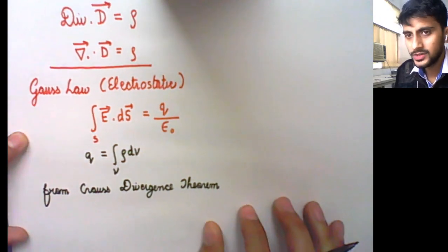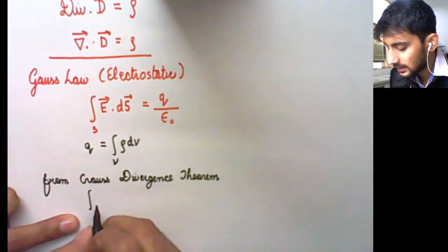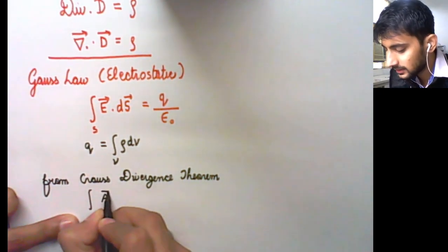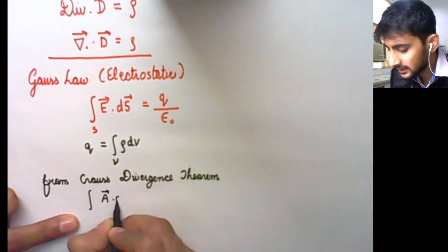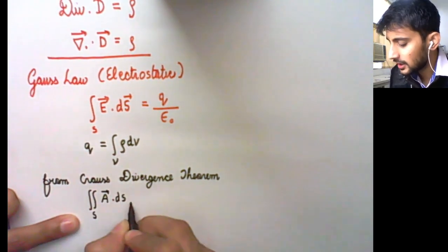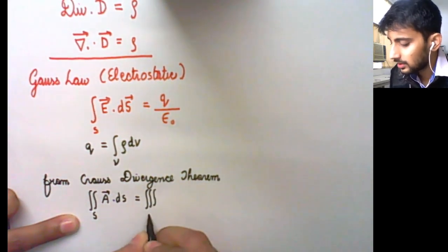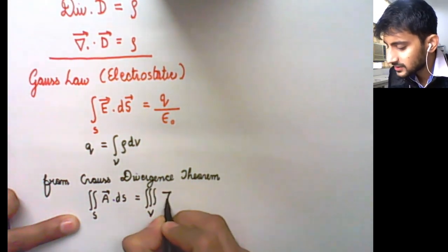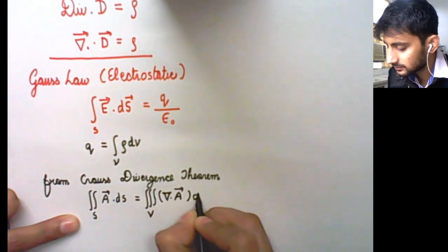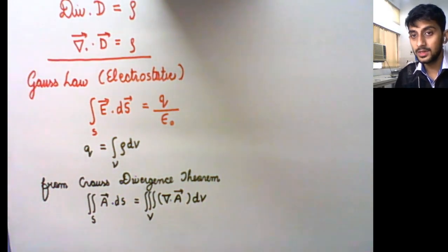From Gauss's divergence theorem, we know that if A is a vector quantity, then the surface integral of this vector quantity over a closed surface equals the volume integral of the divergence of that quantity.